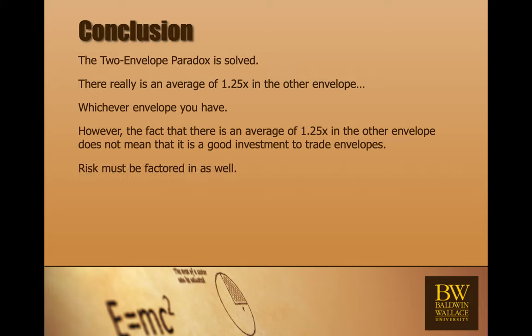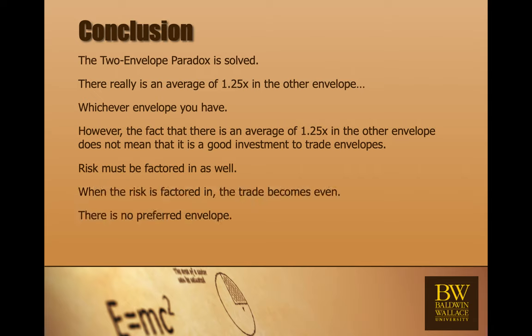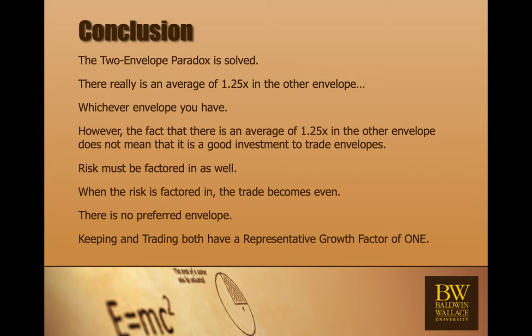You have to factor in the risk as well. Trading has a positive average expectation, but when you factor in the risk, the trade becomes even. There is no preferred envelope. Keeping and trading have a representative growth factor of 1. The envelopes are symmetric.